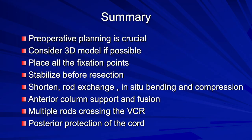In summary, preoperative planning is crucial. One should consider making 3D models to further study the deformity. Place all fixation points before any osteotomy is started. Stabilize the area of the osteotomy before vertebral body resection. The principles of correction are shortening, rod exchange, in-situ bending, and compression with cantilever. Anterior column support is mandatory — in this case an expandable cage and bone graft were used. Multiple rods crossing the vertebral column resection site help prevent early rod failure. Posterior protection of the cord can be performed with allograft or a cage to prevent compression. The bone also provides another source of fusion across that large gap.